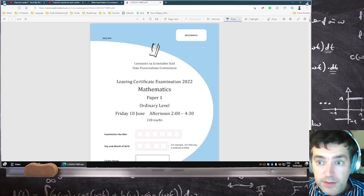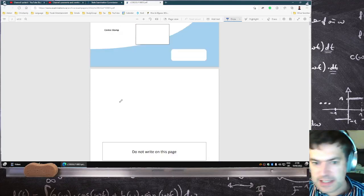Okay, people have been asking for the ordinary level paper today, 10th of June, just came out fresh off the press. Let's have a look at it.